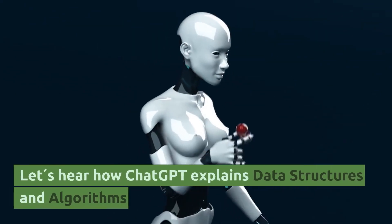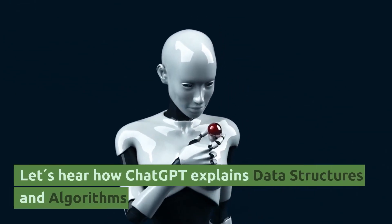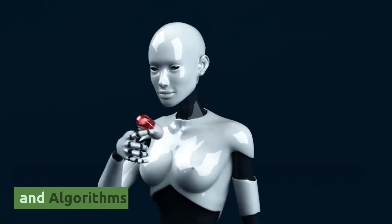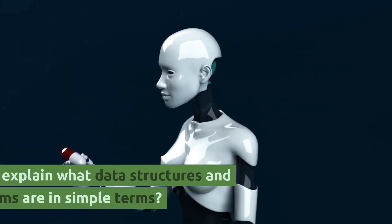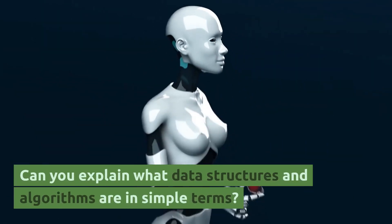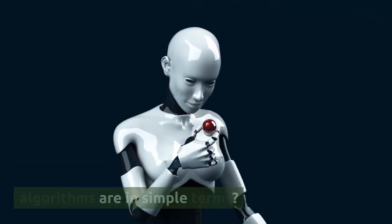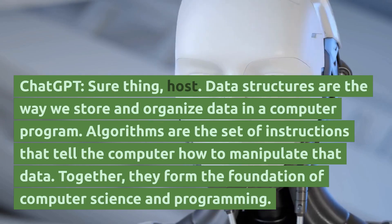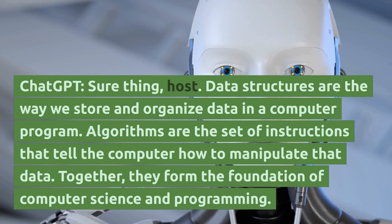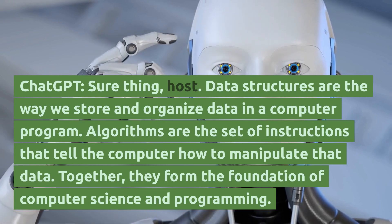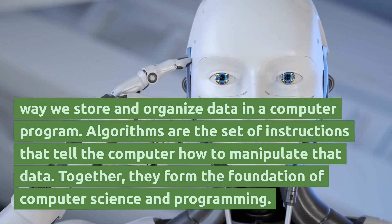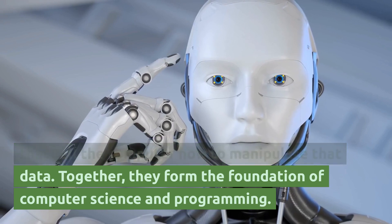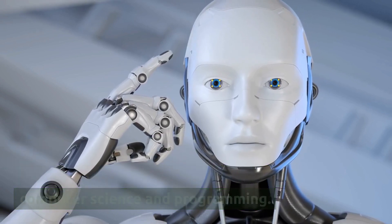Let's hear how ChatGPT explains data structures and algorithms. Can you explain what data structures and algorithms are in simple terms? Sure thing — data structures are the way we store and organize data in a computer program. Algorithms are the set of instructions that tell the computer how to manipulate that data. Together, they form the foundation of computer science and programming.